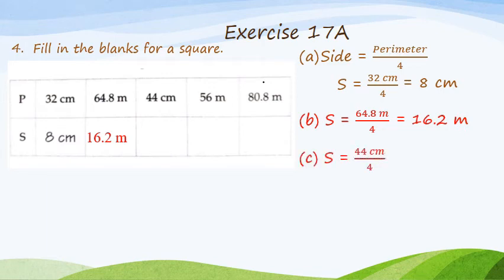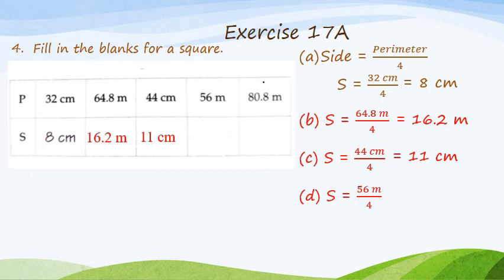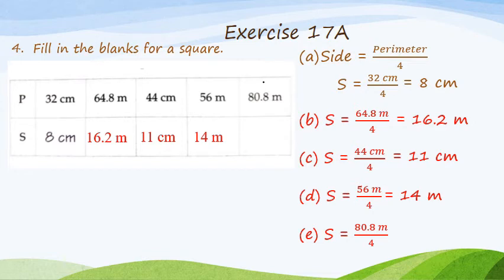In part C, the perimeter is 44 cm, so the side is equal to 44 cm divided by 4. In part D, the perimeter is 56 m, so the side is equal to 56 m divided by 4, which is equal to 14 m. In part E, the perimeter of the square is 80.8 m, so the side will be 80.8 divided by 4, which is equal to 20.2 m. This way we can find out the side of the square by dividing its perimeter by 4.